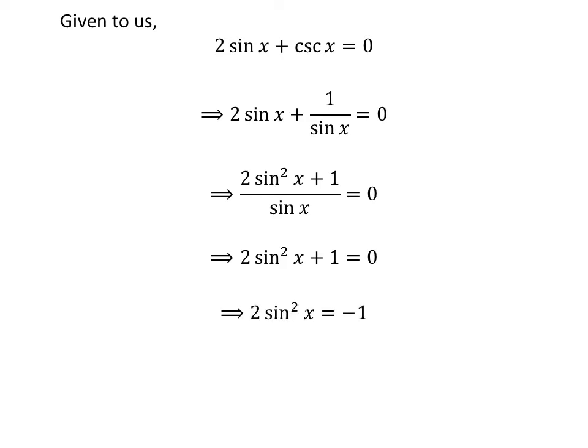Taking 1 from left-hand side to right-hand side gives us 2 sin² x equals -1.